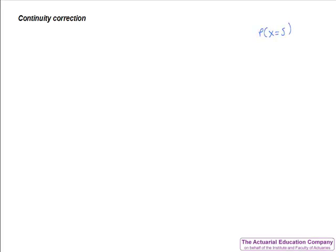Finally, we're going to consider something called the continuity correction. If we are using the central limit theorem to approximate a discrete distribution with a continuous normal distribution, we need to be careful. For example, the probability that X equals 5 is meaningful for a discrete random variable, but it isn't for a continuous random variable, since a continuous random variable takes an infinite number of values and so the probability of being any one of them is essentially 0.